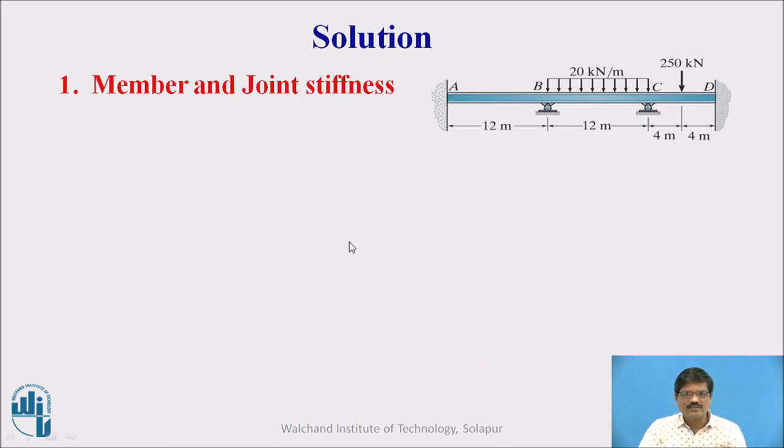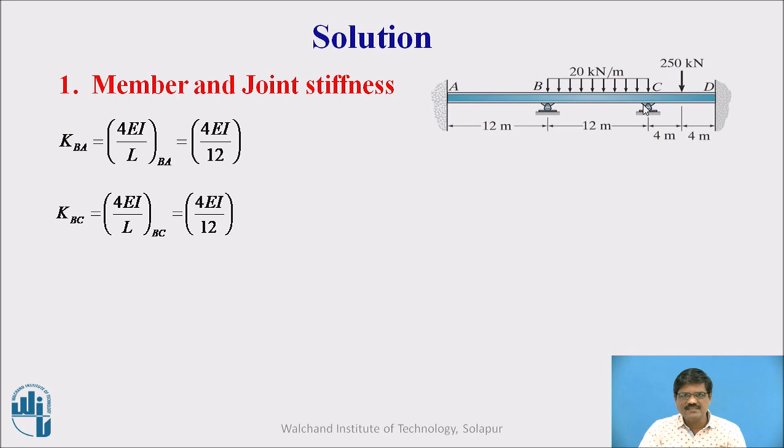We have to start with the determination of the stiffnesses. So we have to find the stiffness of all the members and then we have to find the stiffness of joints. If I consider joint B here, we have two members meeting here, BA and BC. The stiffness of member BA will be 4EI by L since opposite end is fixed here. And for BC also it will be 4EI by L because C is interior support.